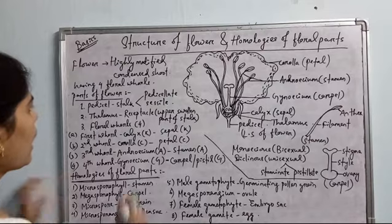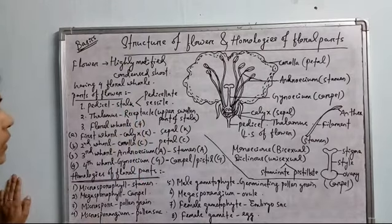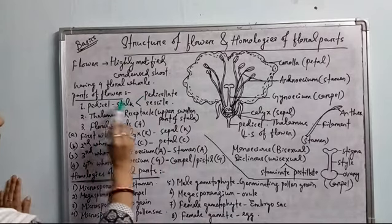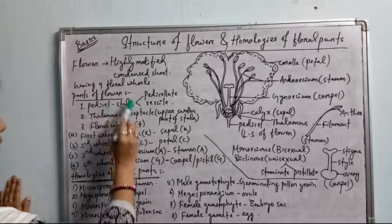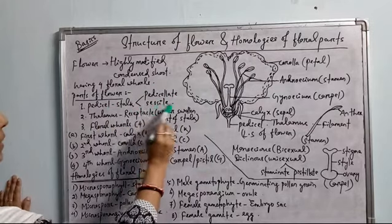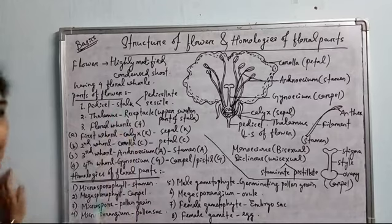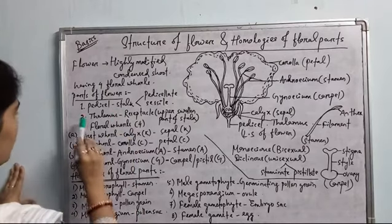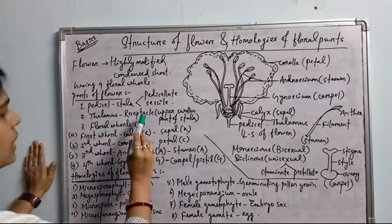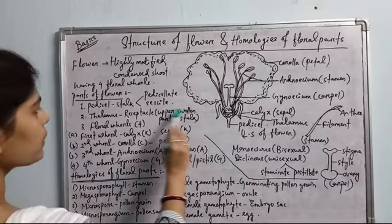Based on the presence or absence of the stalk, flowers are of two types. If the flower has a stalk or pedicel, it is called pedicellate. Stalk-less or pedicel-less flowers are called sessile flowers. The second part is the thalamus — the thalamus is the receptacle, which is the upper swollen part of the stalk.